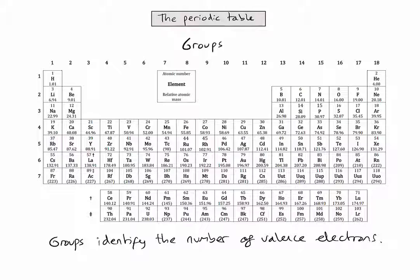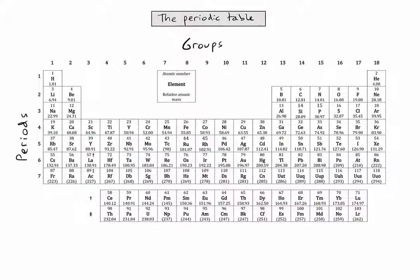Periods, on the other hand, are horizontal rows in the periodic table. They are named from 1 to 7 and tell us which outer energy level is occupied by electrons.